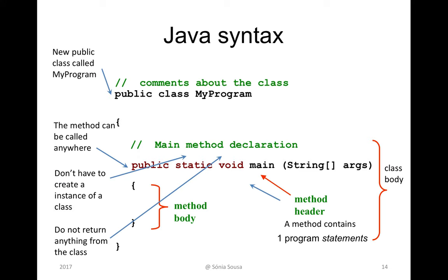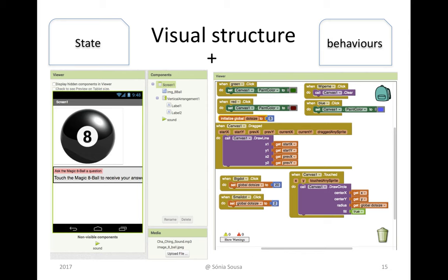Java can be written in two different ways — using a text-based syntax, or with App Inventor, where you have two different windows to describe the statement and the behavior. On the left-hand side you describe the statement, meaning the visual aspects of your object: the image, labels, text, color, and so on. On the right-hand side, you assign behaviors to specific components of your object.